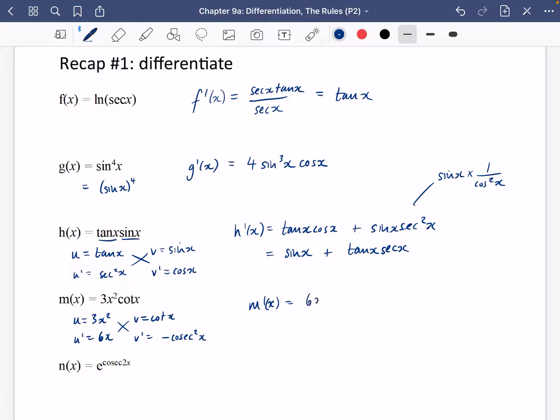So we're going to have 6x cot x minus 3x squared cosec squared x. And you could simplify that by taking out a factor of 3x if you wanted to, to leave you with 2 cot x minus x cosec squared x. But it's not necessary to do that.